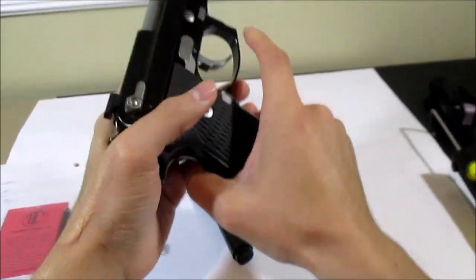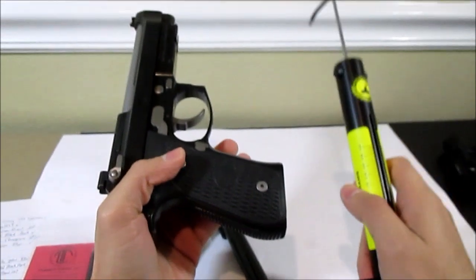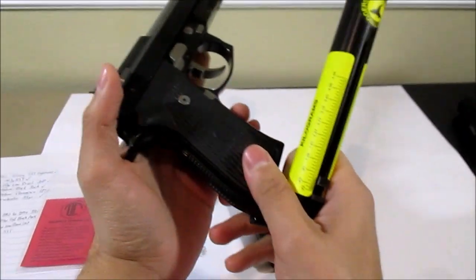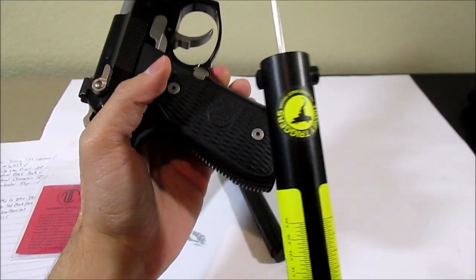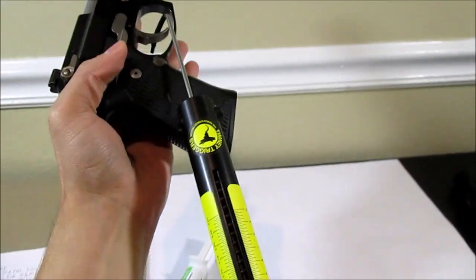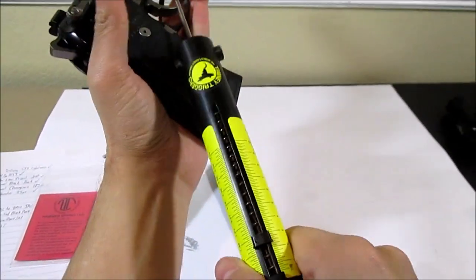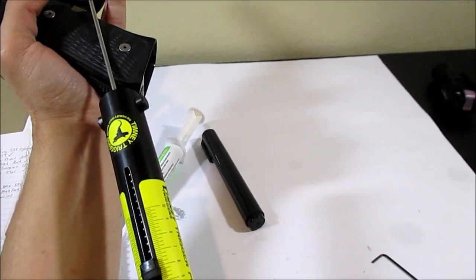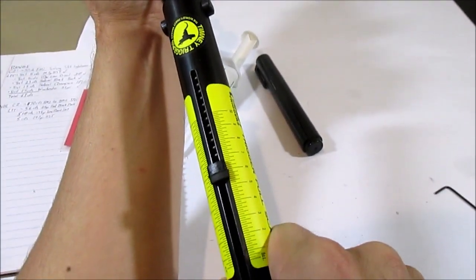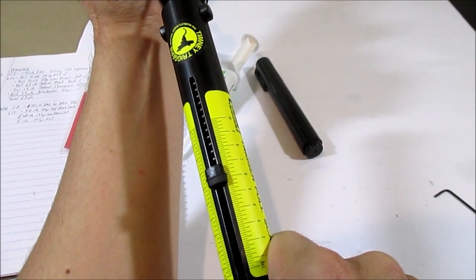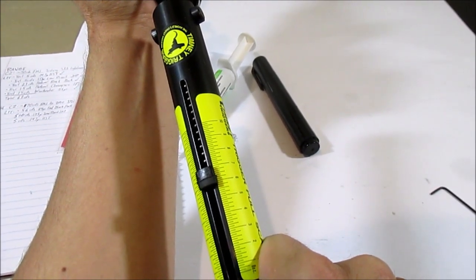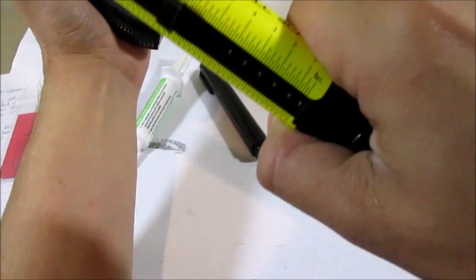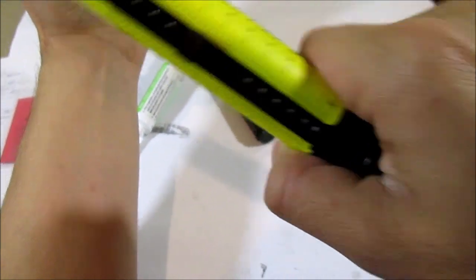So I'll go ahead and show you the trigger pull weight now. So before it was about six, when I did it twice the average was six pounds 11 ounces. So let's see what we're getting now. Okay, six pounds six ounces on that one.